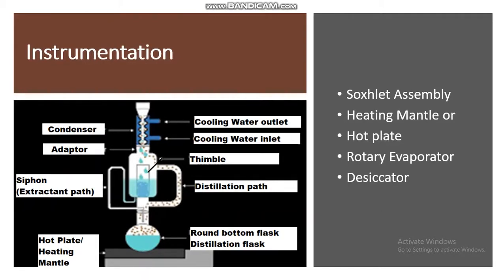For crude lipid extraction, the instrumentation includes a Soxhlet assembly, heating mantle or hot plate, rotary evaporator, and desiccator. The figure on the left shows the Soxhlet assembly, which consists of a round-bottom distillation flask placed on a heating mantle. Vapors travel through the distillation path into the condenser, where they cool down and drip as liquid into the sample held in a thimble. The extractant passes through a siphon and collects back into the distillation flask.